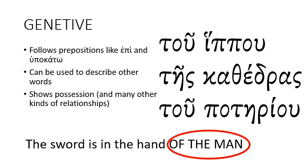The forms for the genitive case: masculine is 'tu ipu' — the '-u' ending is the indicator of the genitive case in the masculine. Feminine is 'teis cathedras' — '-as' or '-ais' at the end of the word is the indicator for the feminine. And the neuter is 'tu poteriu' — again, the '-u' ending.